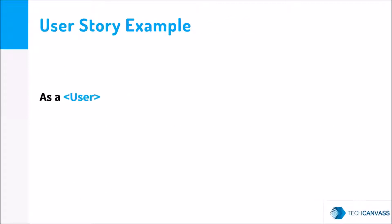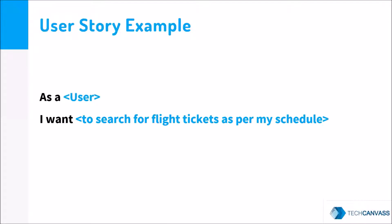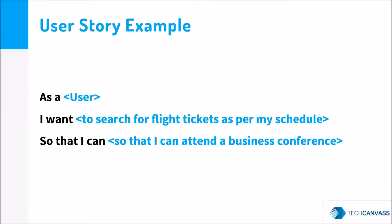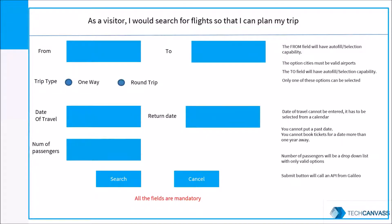Let's take an example. A user is going to search for flight tickets to attend a business conference. This is the front side of the card where, on the top, we have the user story written: as a visitor, I would search for flights so that I can plan my trip. At the bottom, we have the screen prototype showing which fields are going to be there. On the right-hand side, specifications for each field are also mentioned.